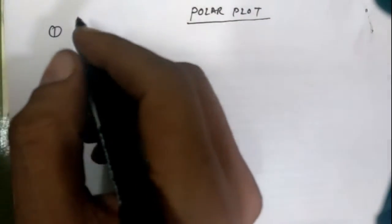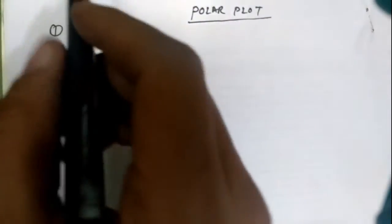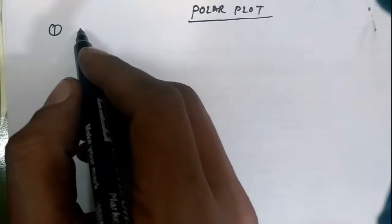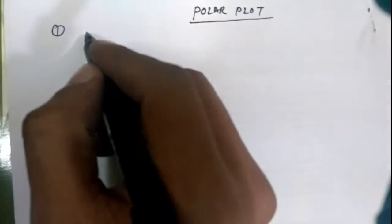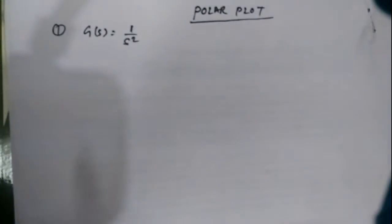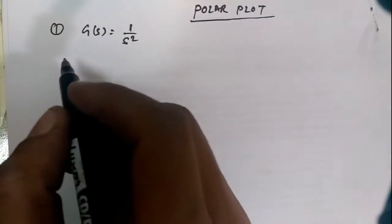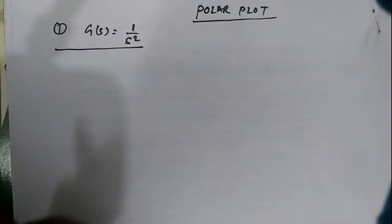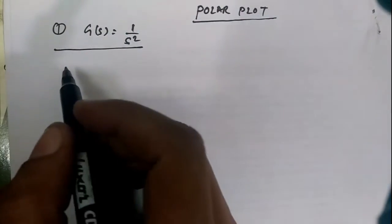Hello everyone. Today we'll discuss polar plots. We'll draw the polar plot of some basic transfer functions. Specifically, G(s) = 1/s². We will go through a step-by-step solution for this.